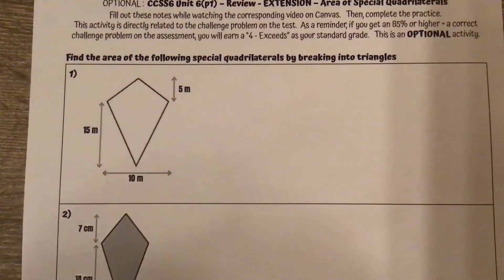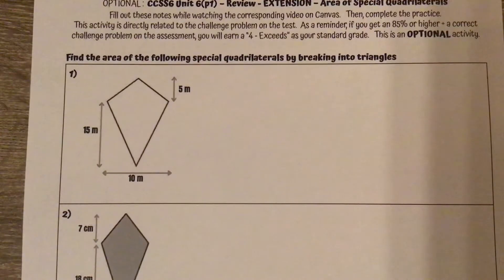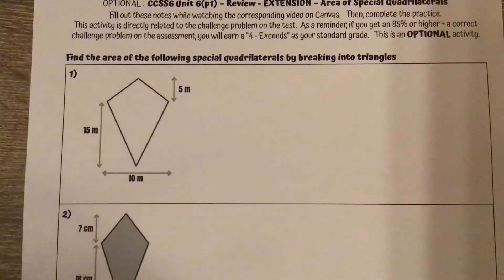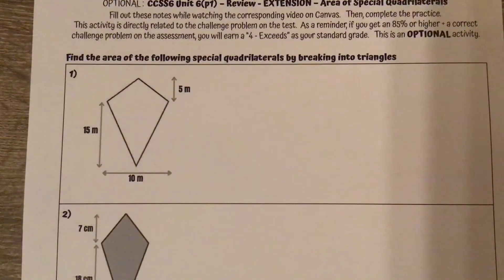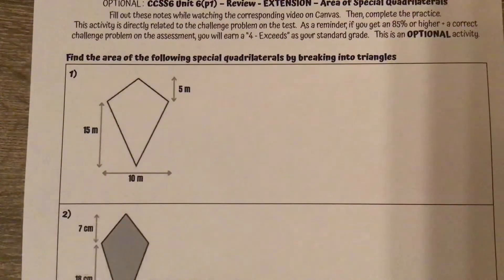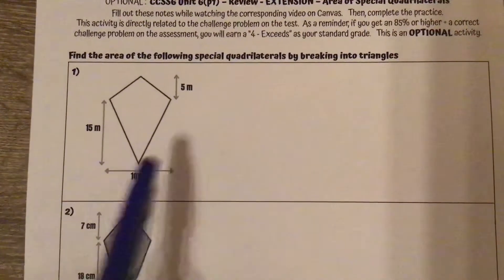For this extension, we are going to look at the area of special quadrilaterals, specifically kites. We're going to use the same idea that we used for trapezoids, which are a kind of special quadrilateral, where we're going to divide it into triangles.